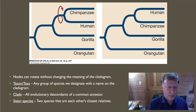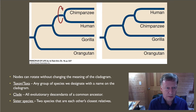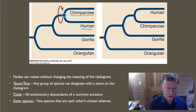Next we come to sister species. Sister species are two species that are each other's closest relatives. Looking at this cladogram, the chimpanzee's closest relative is the human, because they share a common ancestor at this point in time. So chimpanzees and humans would be referred to as sister species based on this cladogram.